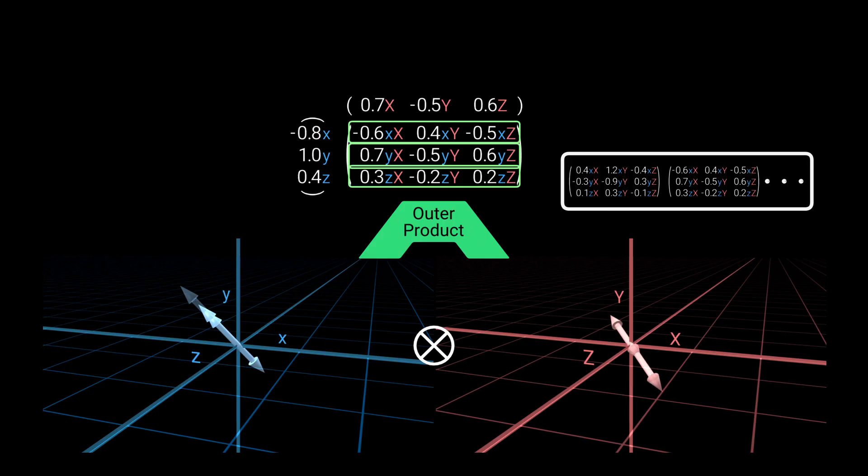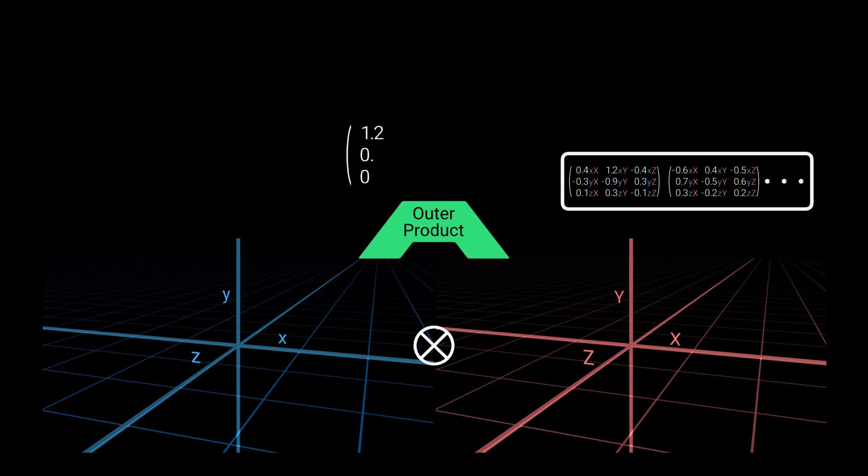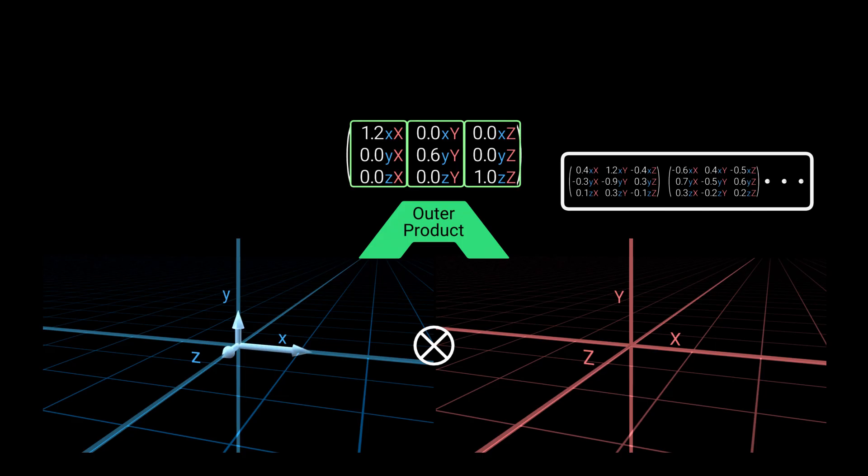But not every matrix has this property. Consider for example this matrix. All the components on the diagonal are non-zero, and the rest are zero. Drawing its columns in the blue space, we see they point in different directions. And the same is true for the rows. So this matrix can't be obtained by an outer product of any two vectors, and currently it's not in our space.